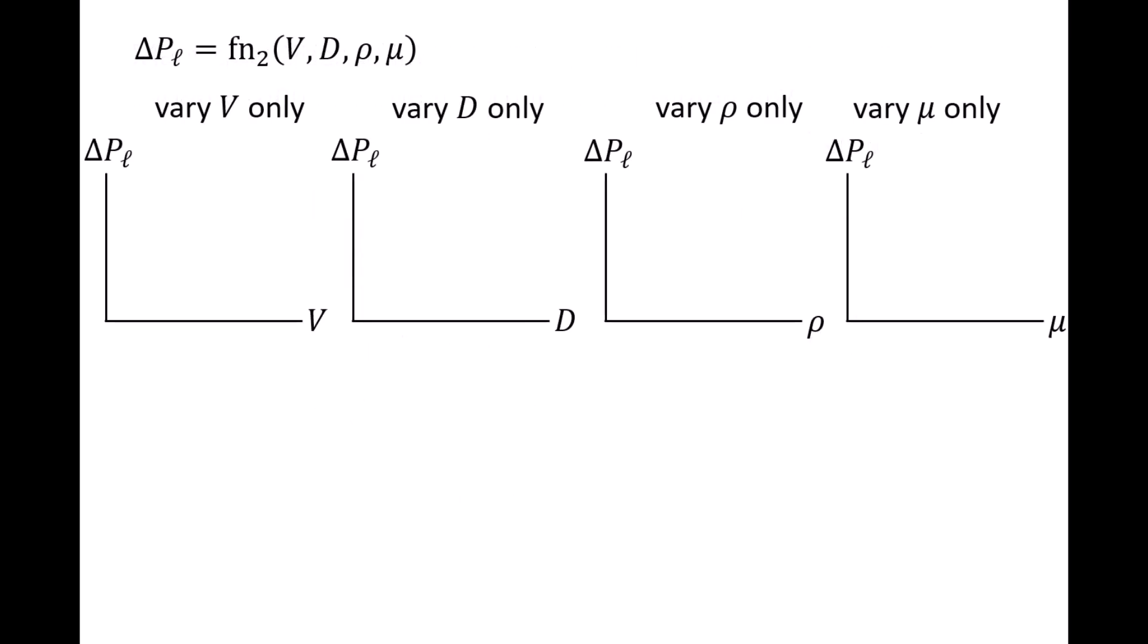And let's say that we conduct those experiments. In the first experiment, we only vary the flow speed v and observe the corresponding value of delta p l. In the second experiment, we only vary the pipe diameter d and observe the value of delta p l. In the third experiment, we only vary fluid density rho and observe the value of delta p l. And in the fourth experiment, we only vary the fluid's absolute viscosity mu and observe the value of delta p l.